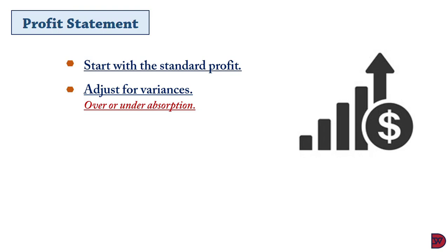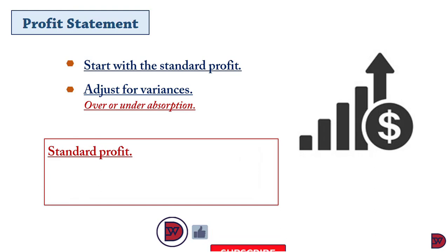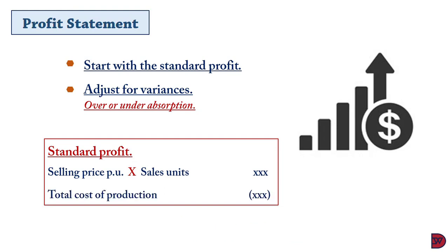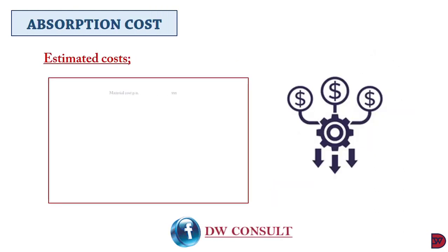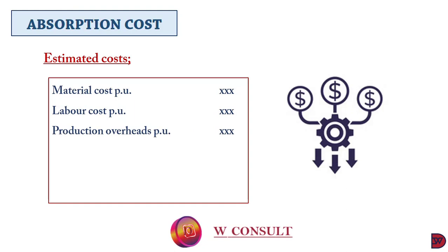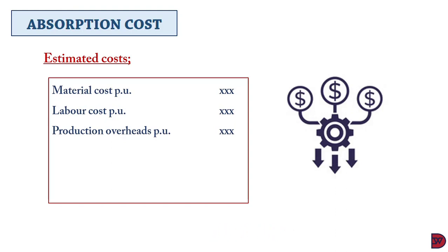Normally, for material and labor there is not much problem — you know the unit cost, so you simply multiply by it. The standardized profit is the selling price per unit multiplied by the number of sales units, less the total cost of production. The total production cost includes material cost per unit, plus labor cost per unit, plus production overhead cost per unit. The production overhead per unit is the budgeted expenditure divided by the budgeted total production units or budgeted total hours, depending on the suitable criteria. This leads to total production cost, to which you add non-production cost to arrive at total cost.